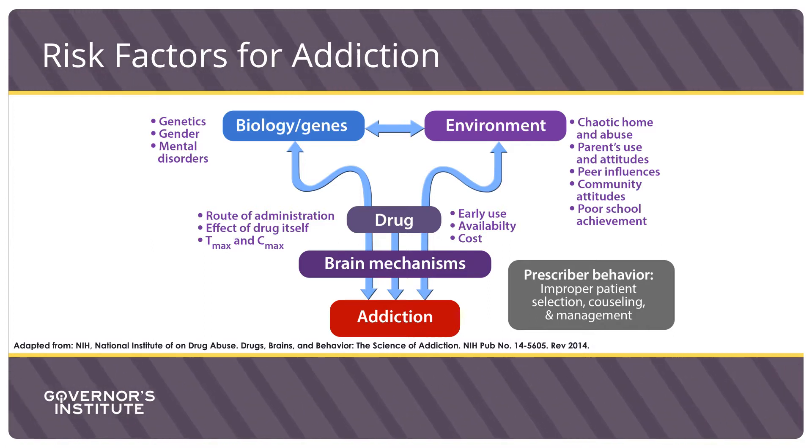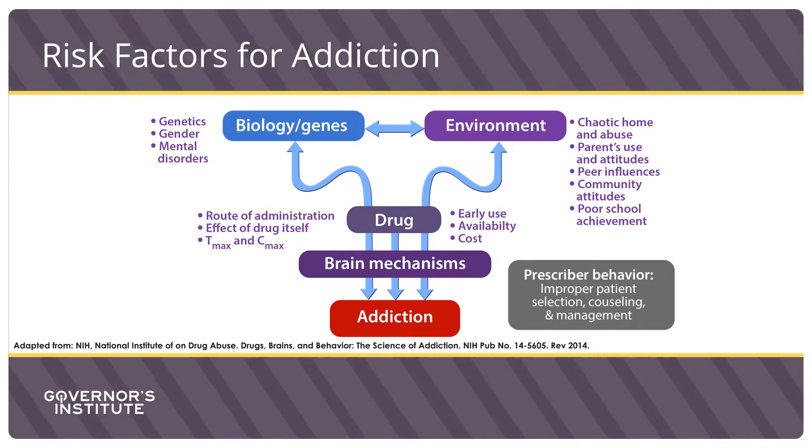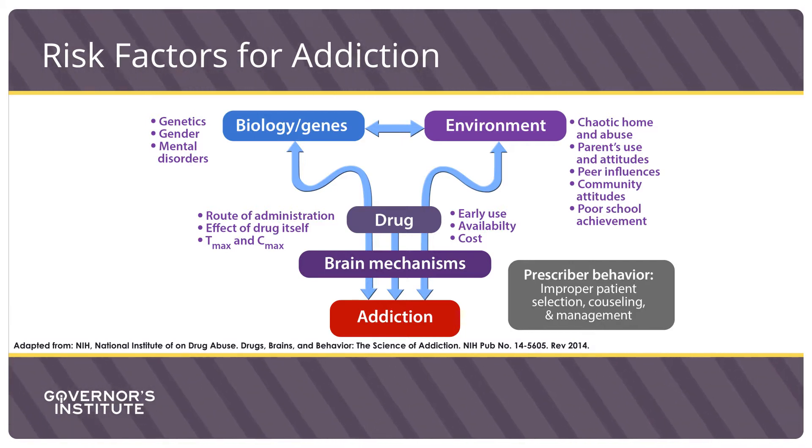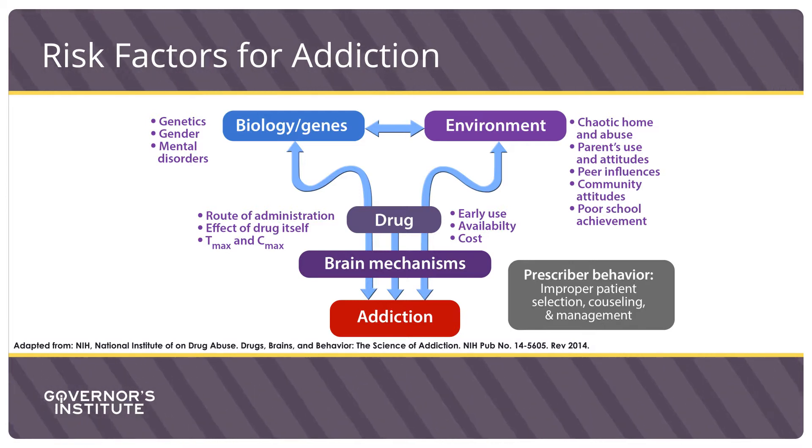Some drugs are more addictive than others. For example, Percocet perks people up and can be very addicting for those people who feel better and energized on it. Early use and more availability to drugs predispose to addiction. Prescriber behavior is also a key factor — those who do not adequately screen for risk, do not counsel and advise patients about risks as well as benefits, and do not adequately monitor patients on opioids put patients at higher risk. This is a place where pharmacists can play a very important role in providing counseling and even offering screening services.